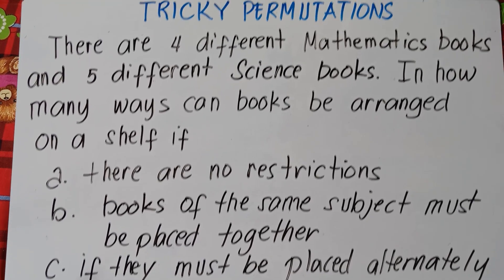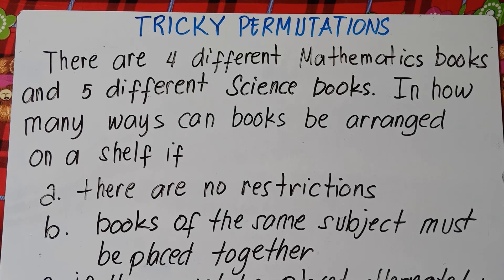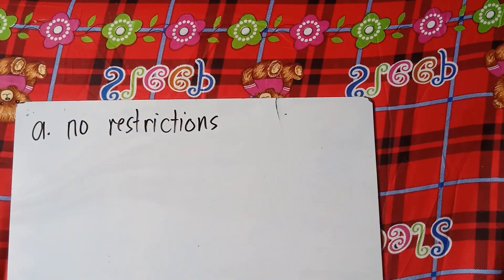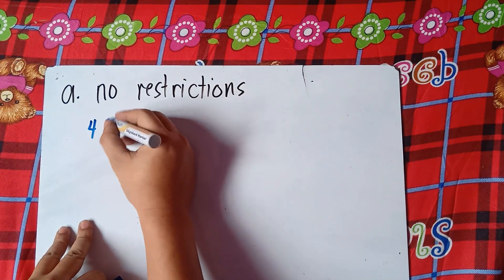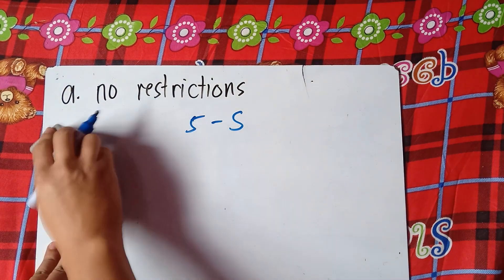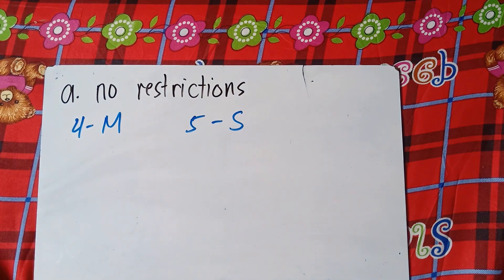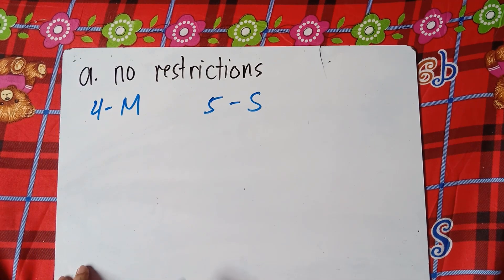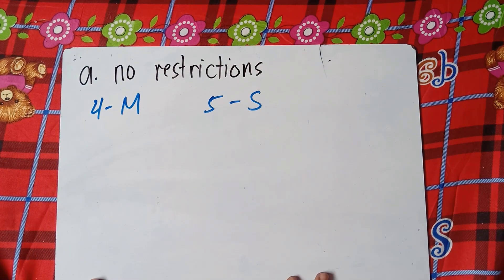Once again, we have four different mathematics books and five different science books. So let's try to answer that. Letter A: no restrictions. If there are no restrictions, it means you can arrange those books in any order.